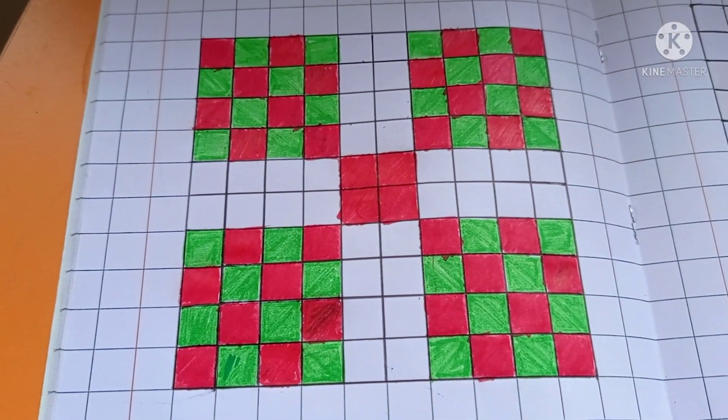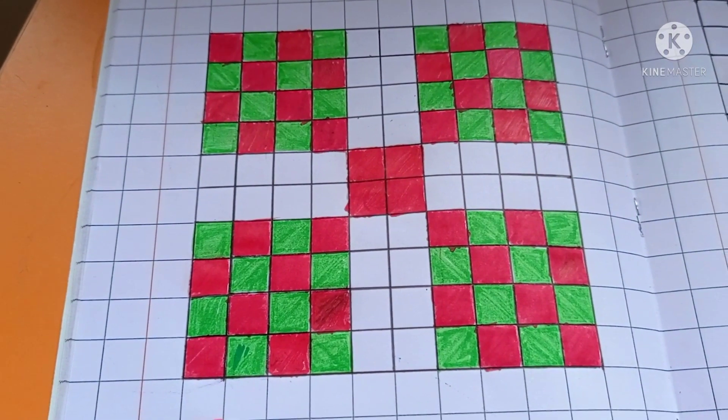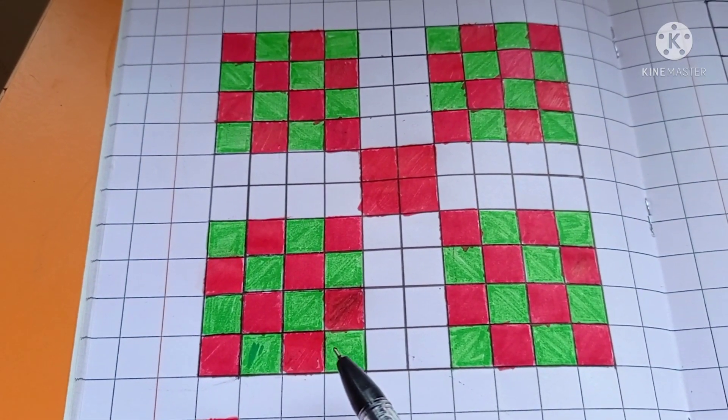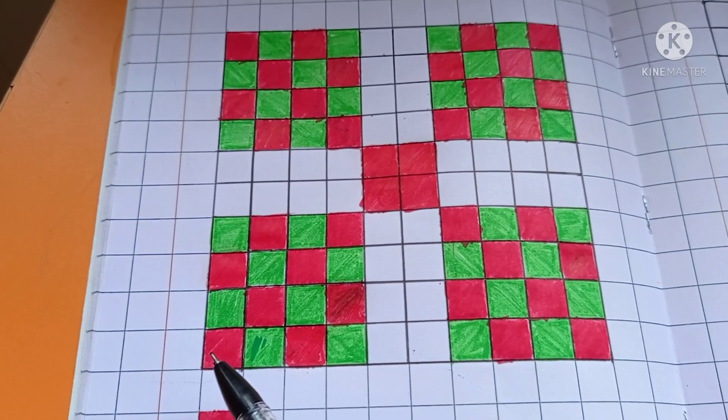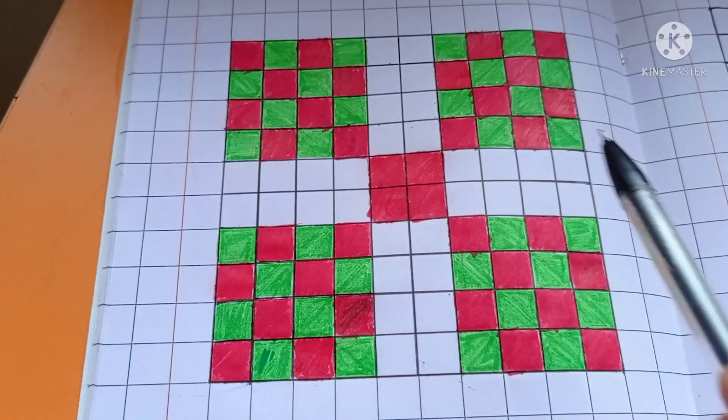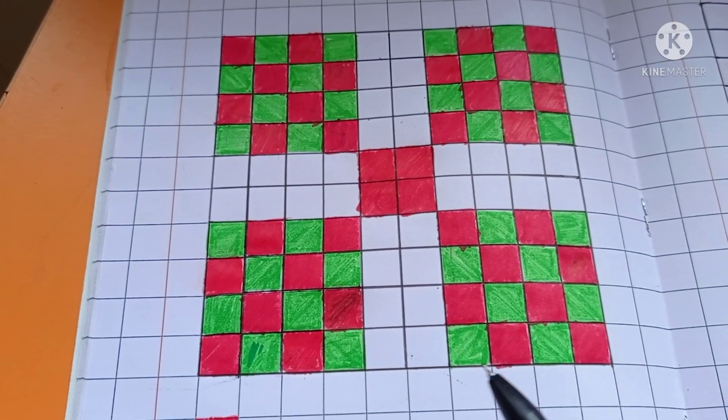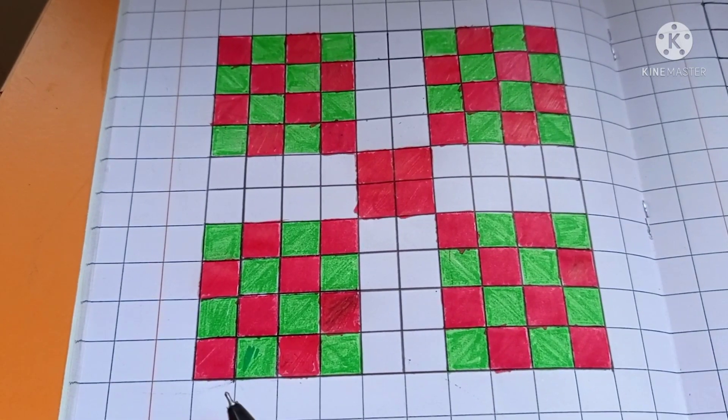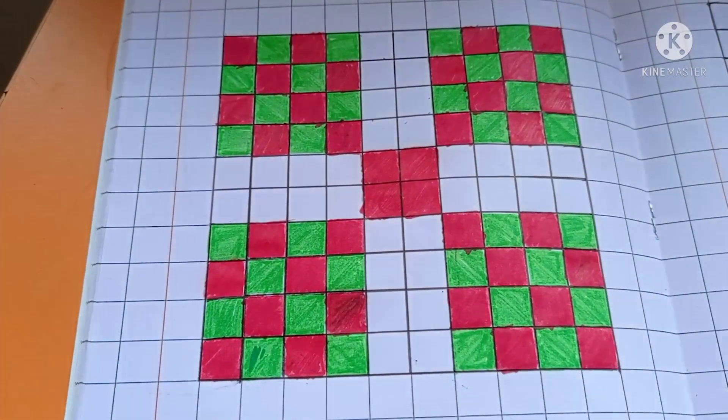This decimal activity is integrated with art. The grid has been colored with two different colors. You can see the pattern. Now, how to represent the two different colors in decimal? The total number of parts are 100.